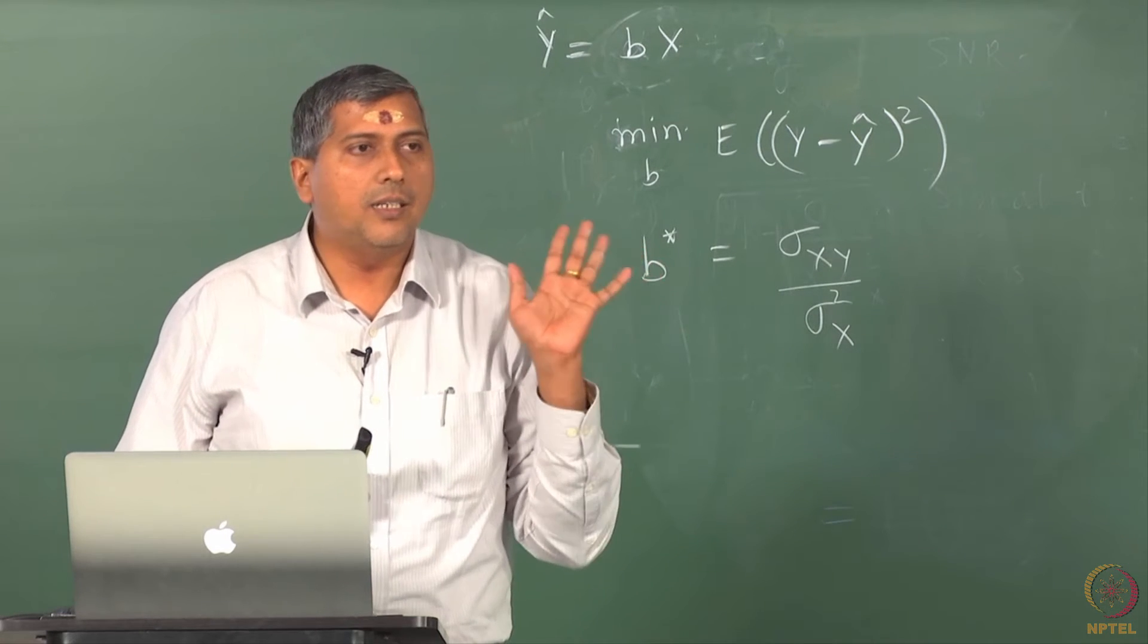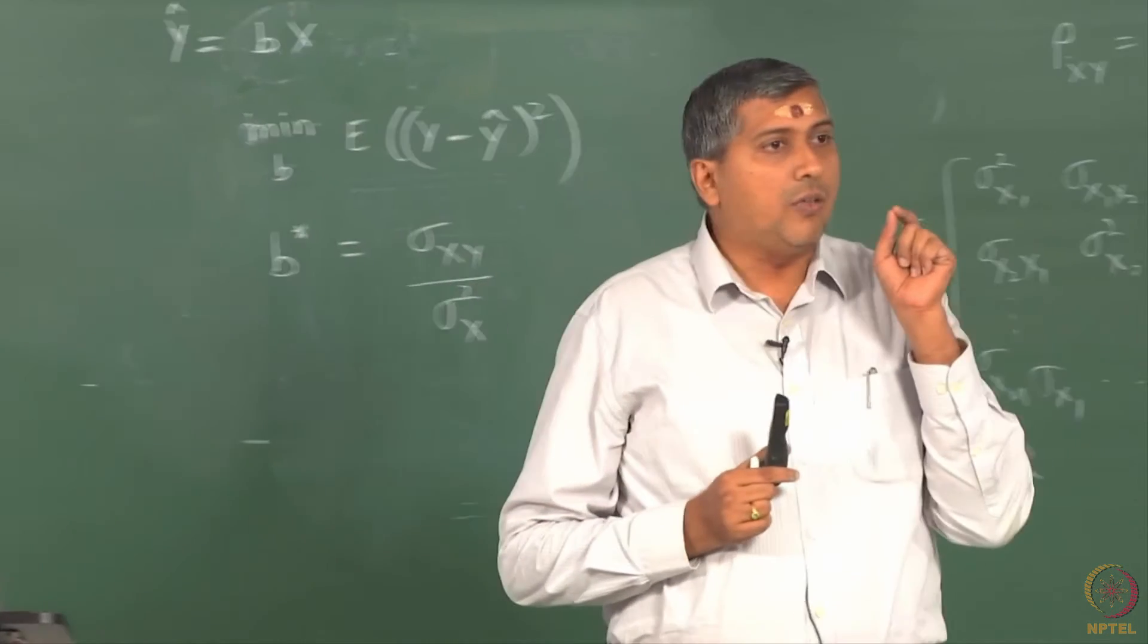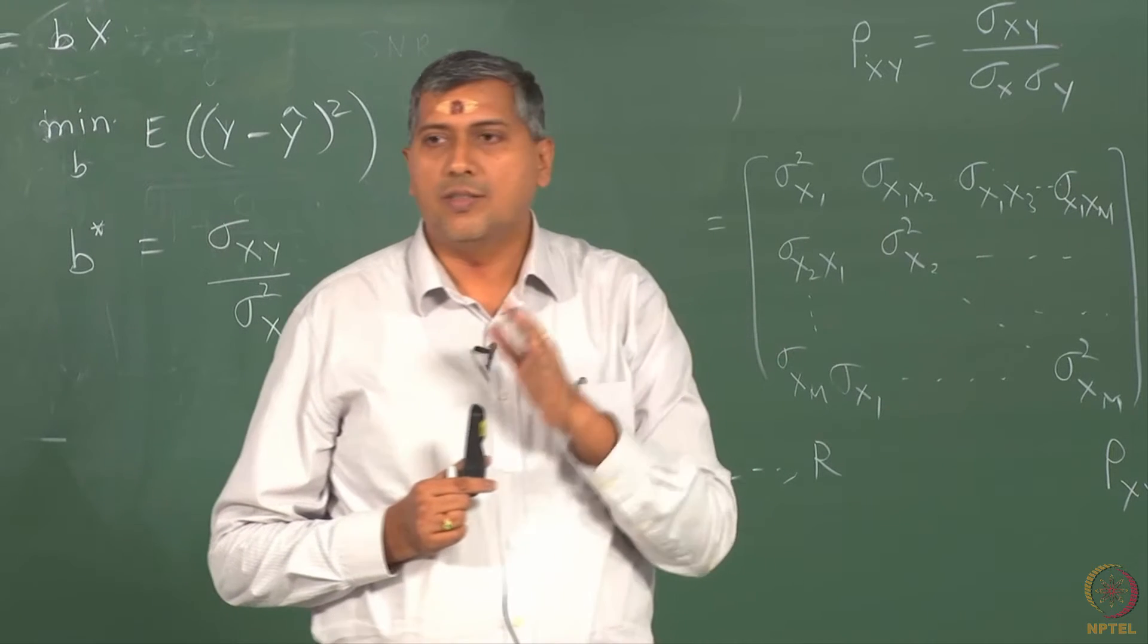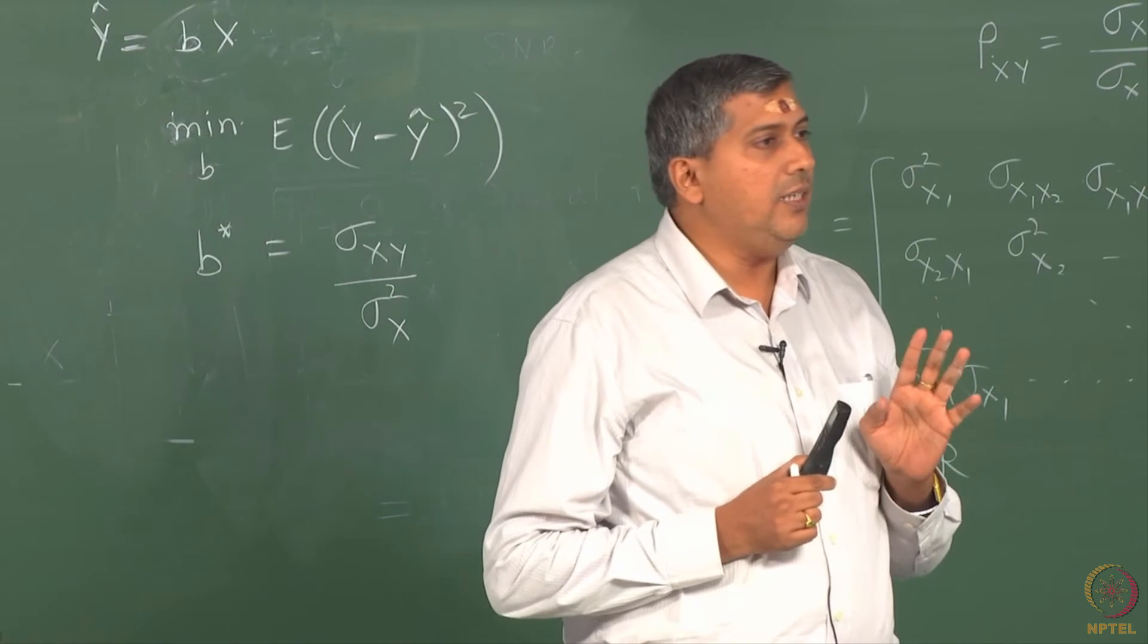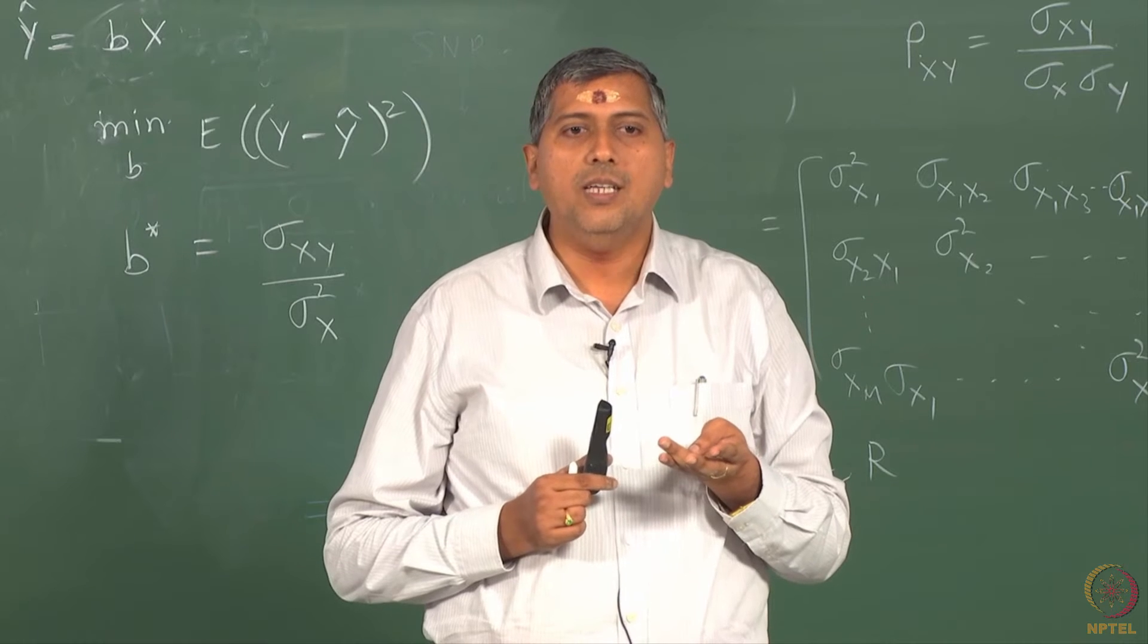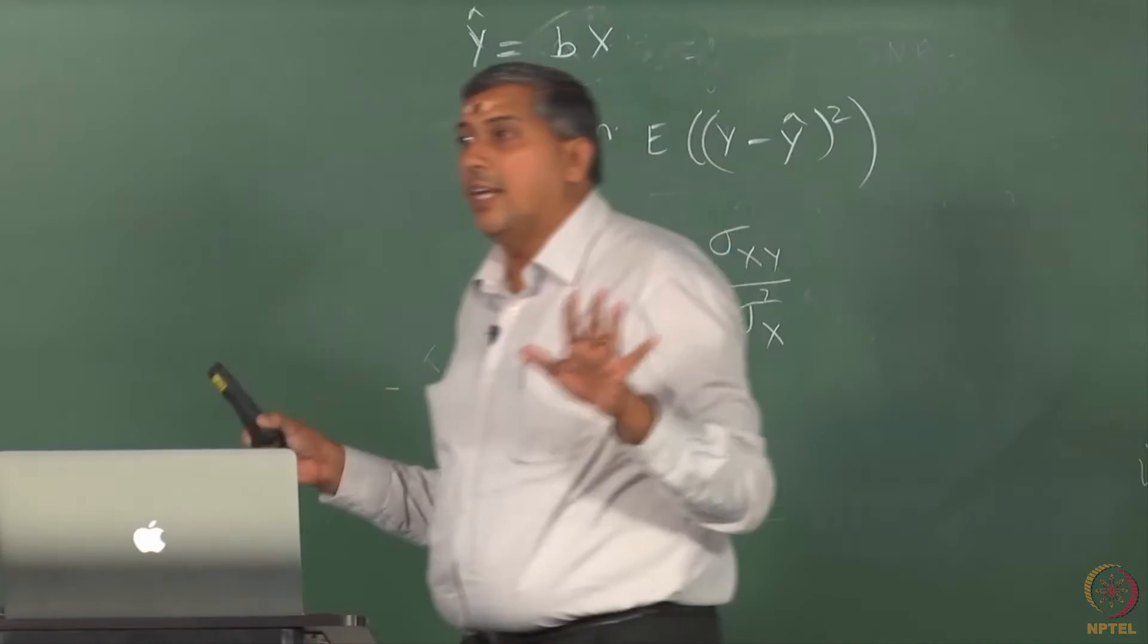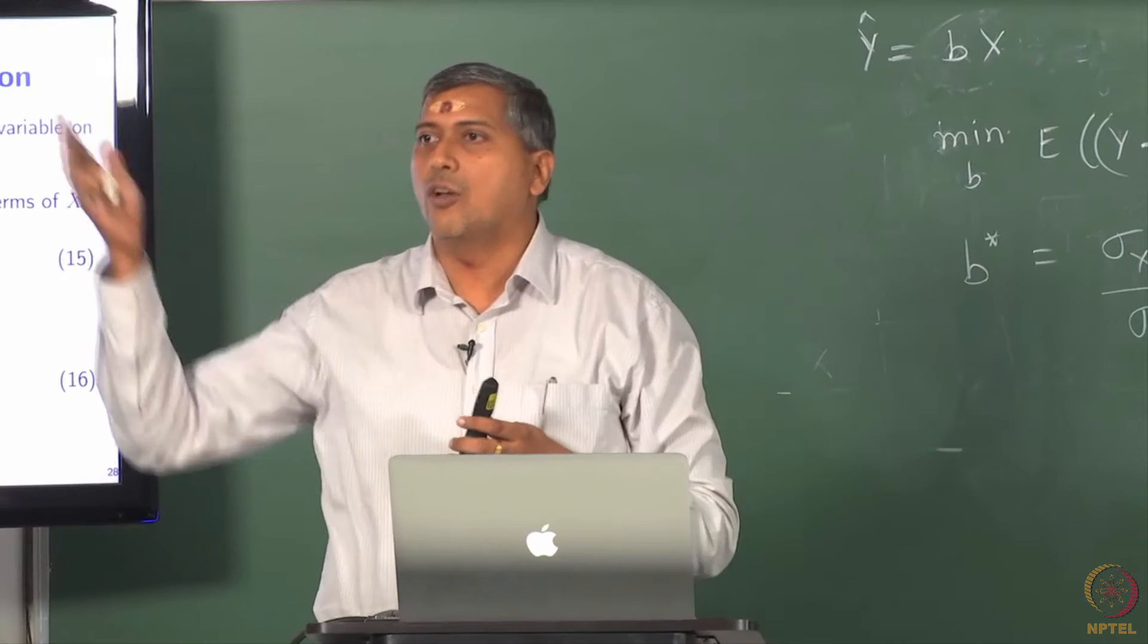So you can see straight away that as far as estimation of a linear model is concerned, or as far as linear regression is concerned, I only need to know sigma xy and sigma squared x. What are they? Sigma xy is the second moment of the joint PDF and sigma squared x is the second moment of the marginal PDF. That is all I need. I do not need to know anything more as far as linear regression is concerned, but if you want to fit a non-linear model, then you will need the knowledge of higher order moments.